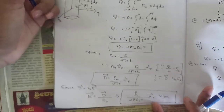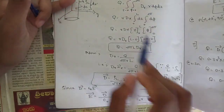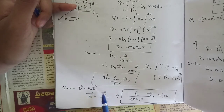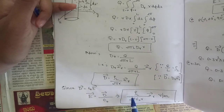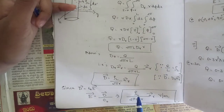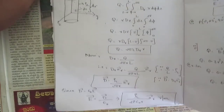Using the relationship D = ε₀E (in free space), we get E = D/ε₀. Therefore, the electric field intensity expression is E = ρl/(2πε₀r) ar volts per meter. This is the final expression for electric field intensity due to an infinite line charge using Gauss's law.